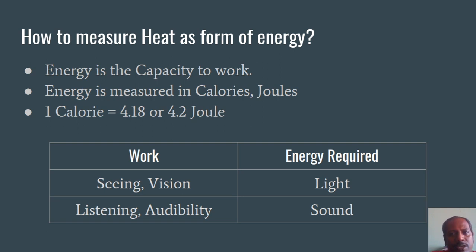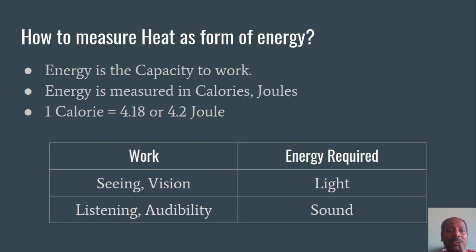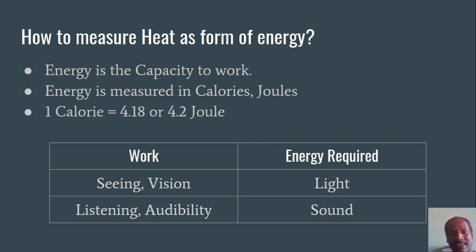Before moving further, we need to work on the topic of energy. What is energy? Energy is the capacity to do work. What is meant by capacity to do work? If you go into a dark room and try to see, you can't do it. You can only see when you have light. If somebody turns the light on, immediately you will be able to see. You get the capacity of vision when you have light energy.